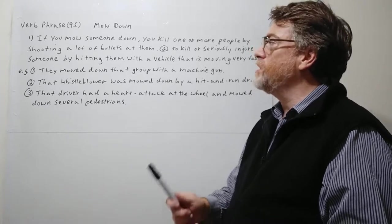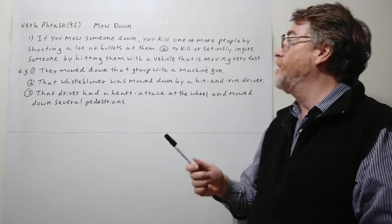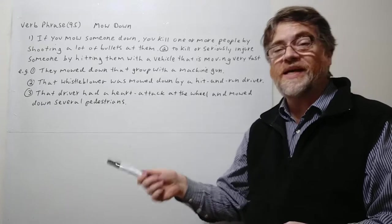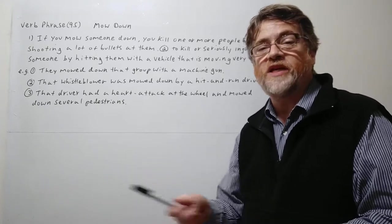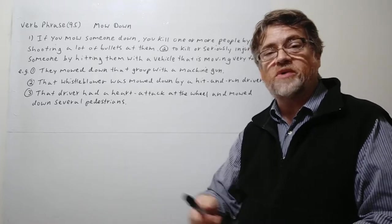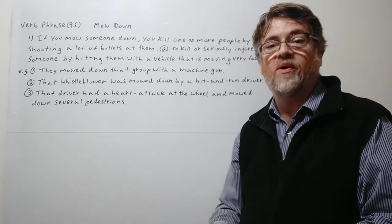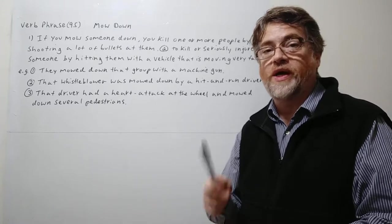If you mow someone down, you kill one or more people by shooting a lot of bullets at them. You might see this in some movies. Maybe some soldiers or maybe some gangsters with a machine gun shooting at a lot of people and they shoot down several people all at once. That's to mow someone down.